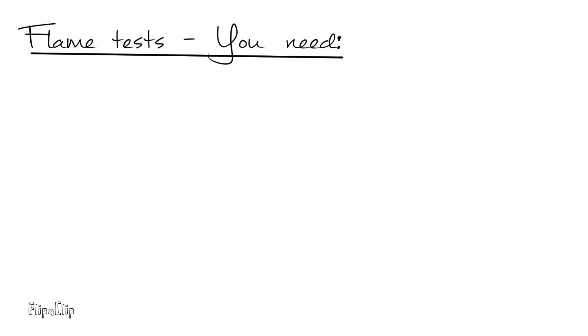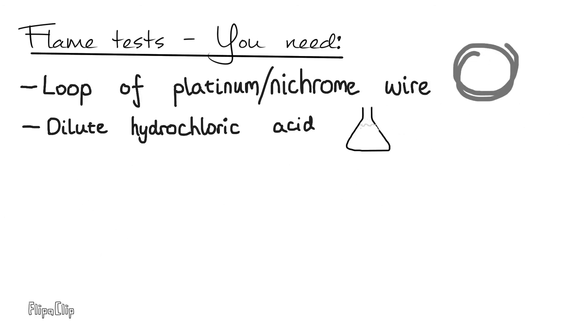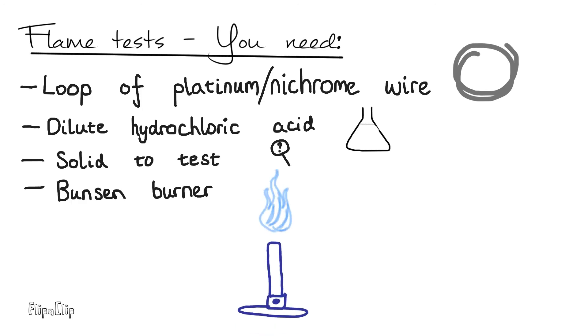To carry out a flame test, you'd need a loop of platinum or nichrome wire, dilute hydrochloric acid, the solid you'd like to test, a Bunsen burner, and a flame would be good.